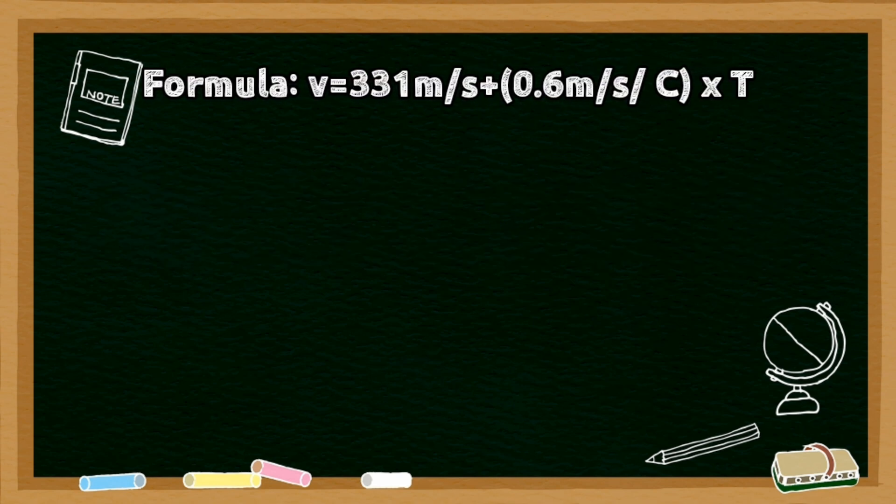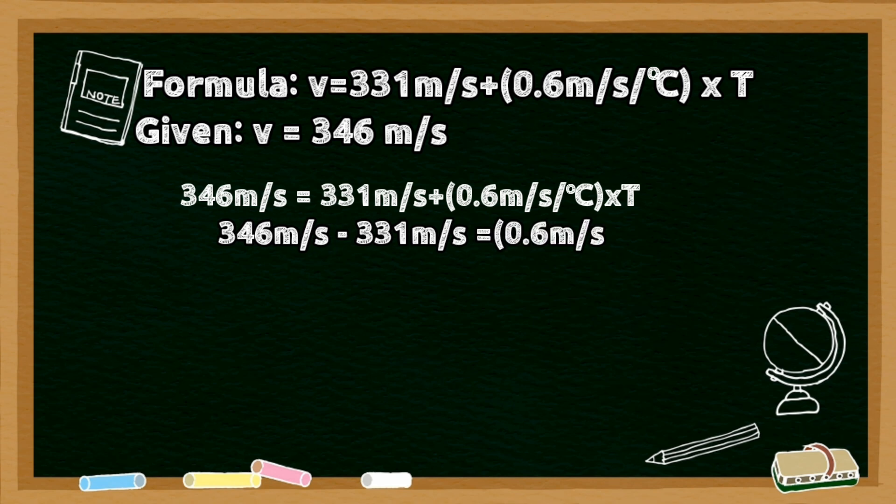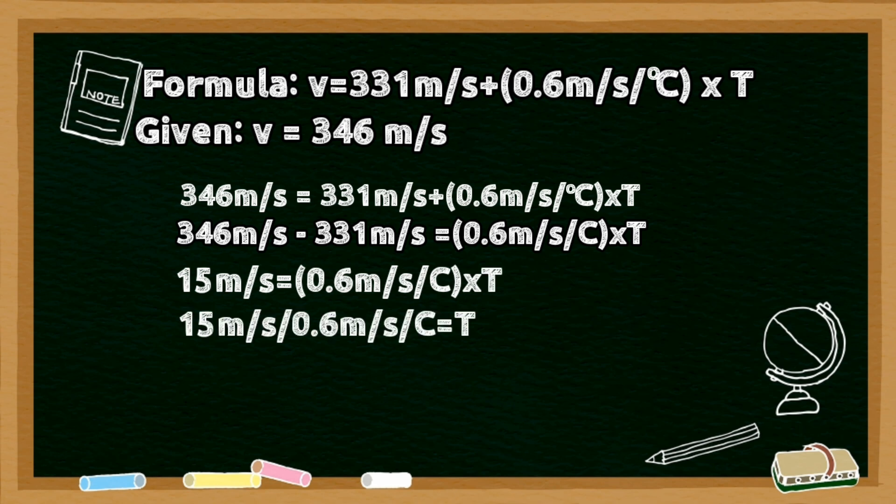Don't forget our formula using our given velocity 346 meters per second. We'll plot in our numbers and we need to subtract 331 from 346 and the answer is 15. Cancel out our meters per second and divide 15 by 0.6 and the answer is 25 degrees Celsius. That's our temperature.